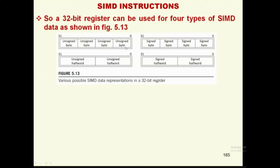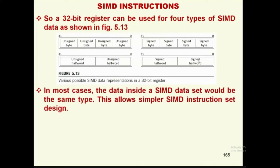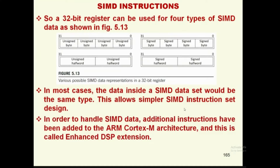When unsigned, there are four unsigned bytes possible in the 32-bit register. Four signed bytes are also possible. If it is a half-word, two unsigned bytes or two signed bytes can be represented. In most cases, data inside SIMD operations would be of the same type, which allows simpler single instruction operations. To handle SIMD, additional instructions have been added to the ARM Cortex M architecture, called Enhanced DSP Extensions.